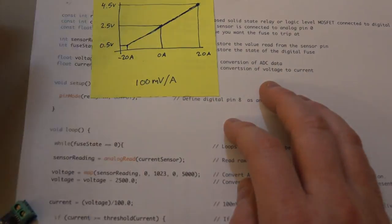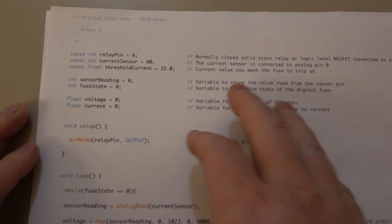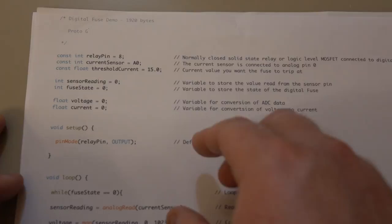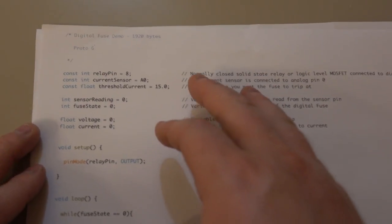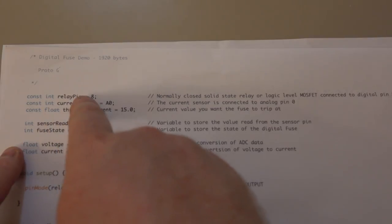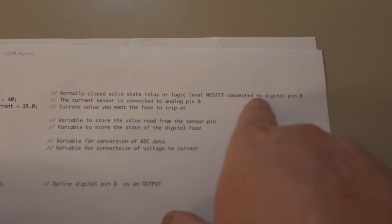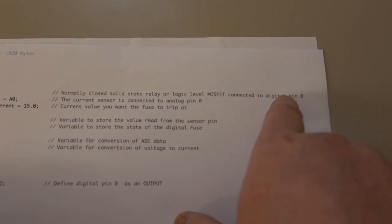I've written this simple code to demonstrate what a digital fuse would look like in programming. I'll put a link in the description so you can download this if you'd like. We want to go ahead and define our variables here at the top. Relay pin equals 8 - I'm just using that for a relay or MOSFET that I'm going to connect to digital pin 8.